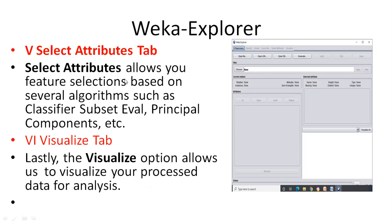The Select Attributes tab allows feature selection based on several algorithms, including subset evaluation and Principal Component Analysis. The Visualize tab allows you to visualize your processed data for analysis — you can view already-loaded data in a visual format for better understanding and analysis.